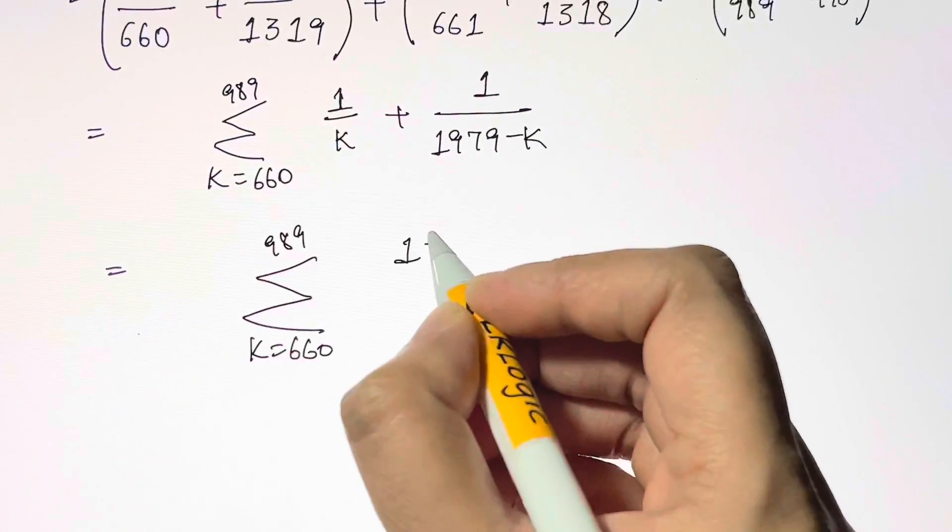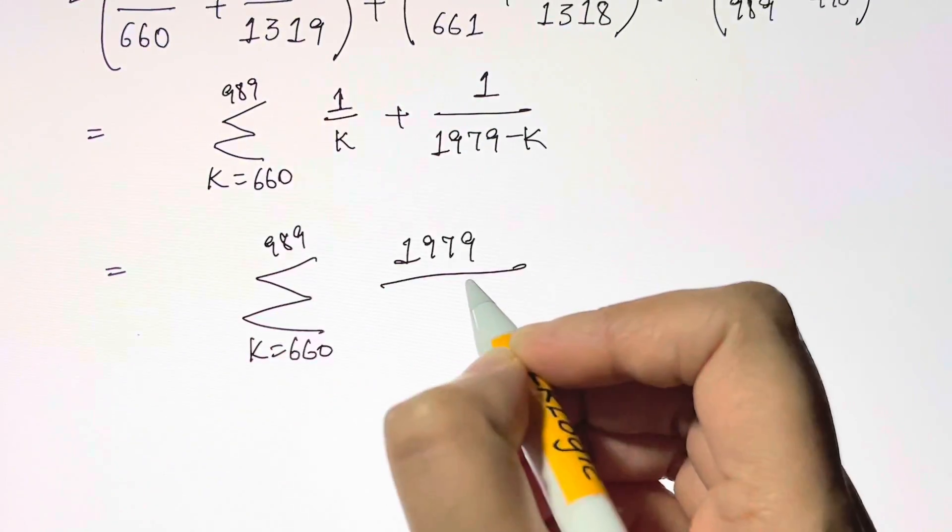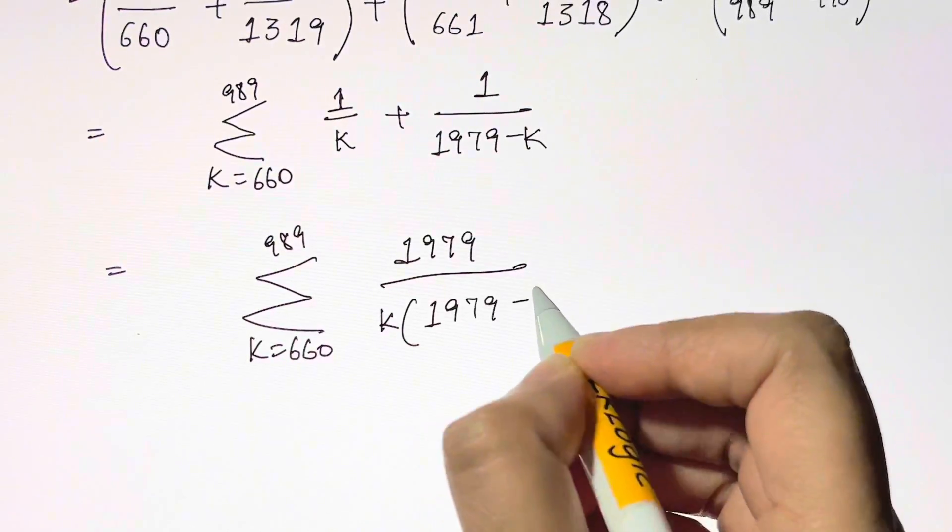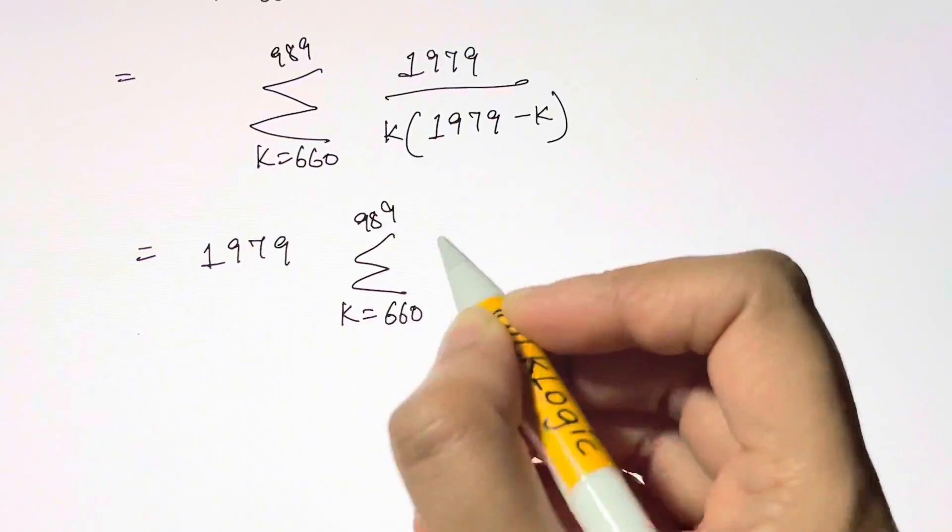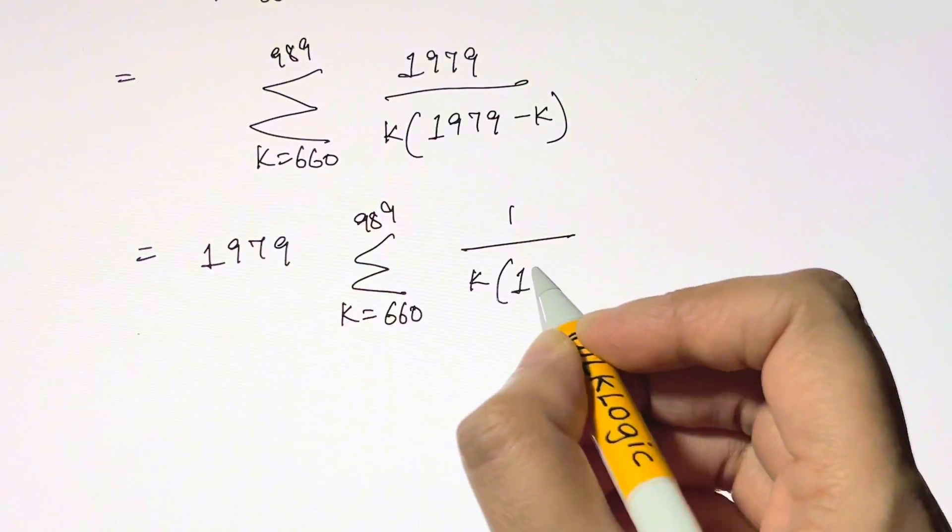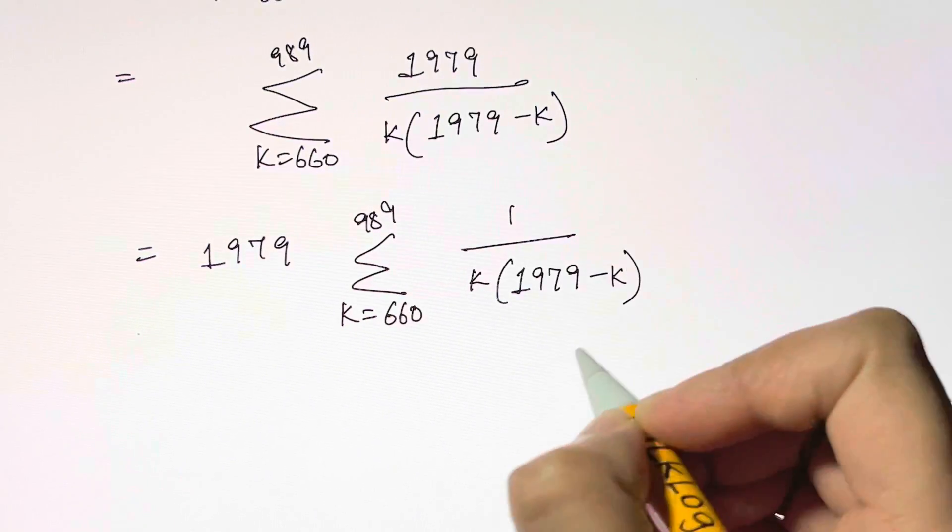Then the numerator is exactly 1979 over k times 1979 minus k. Now we can take 1979 out so we have the summation which is a fraction of 1 over k times 1979 minus k.